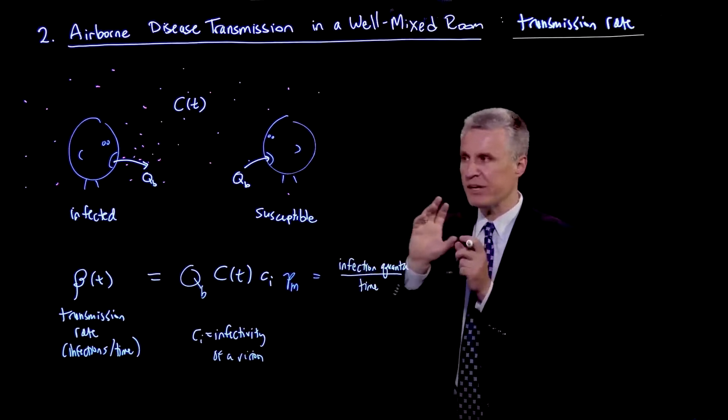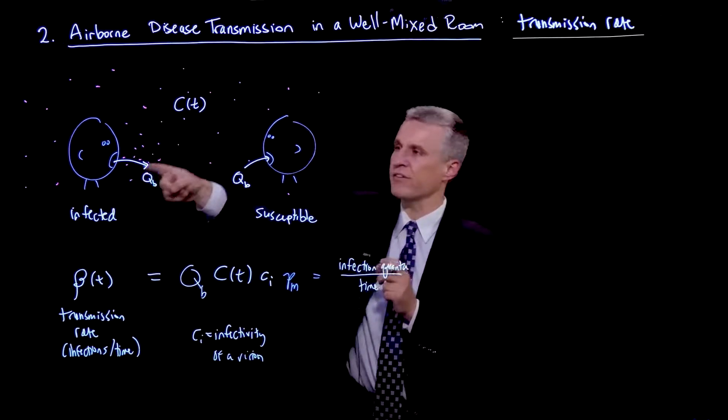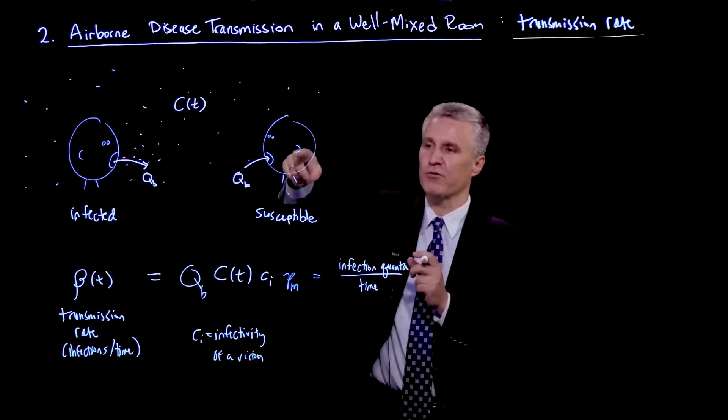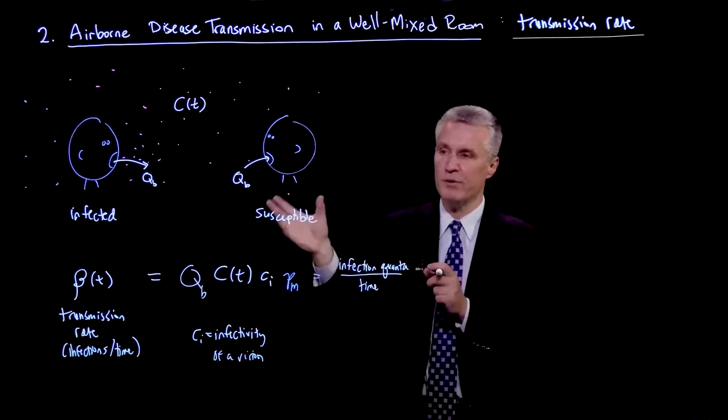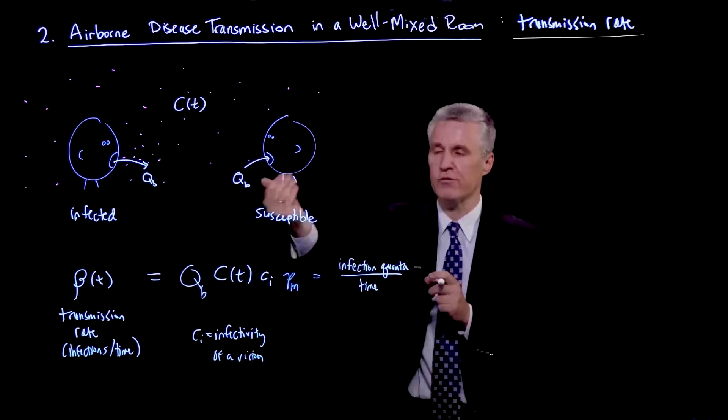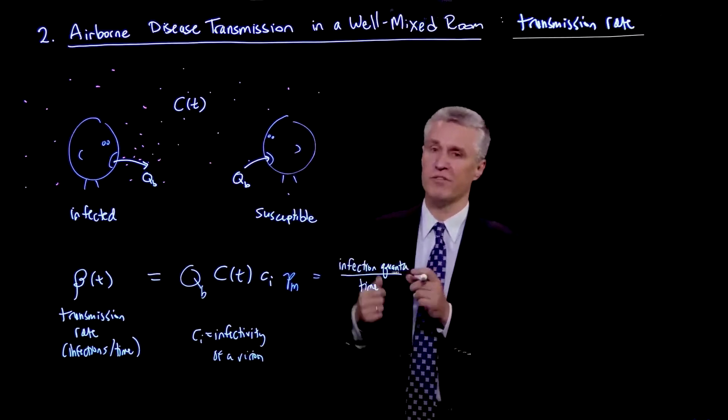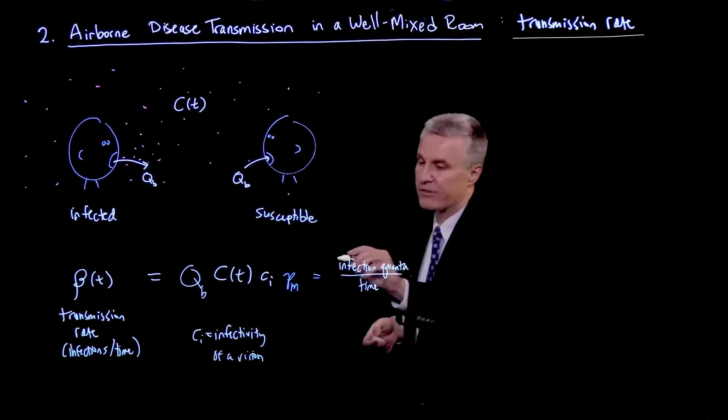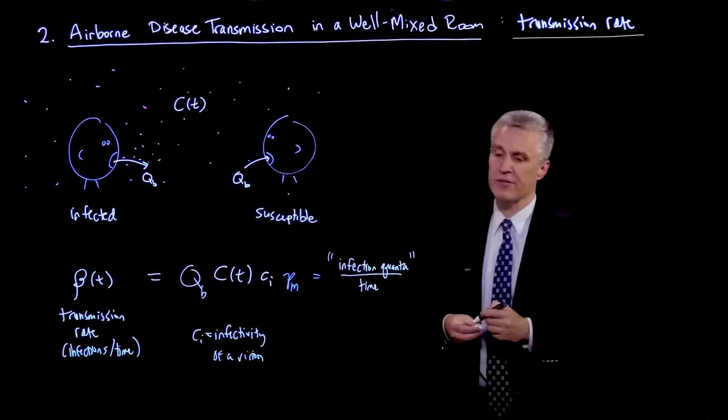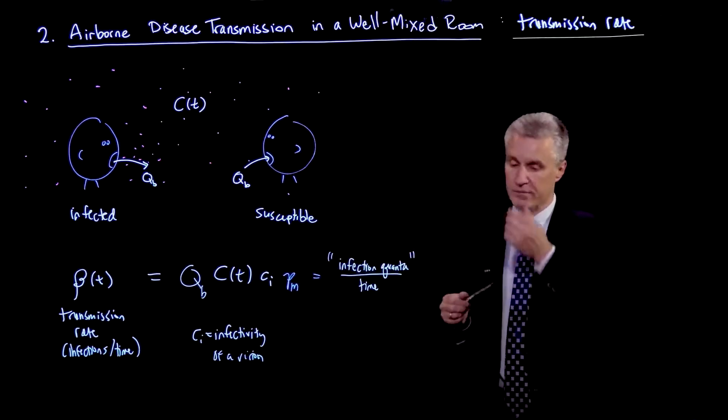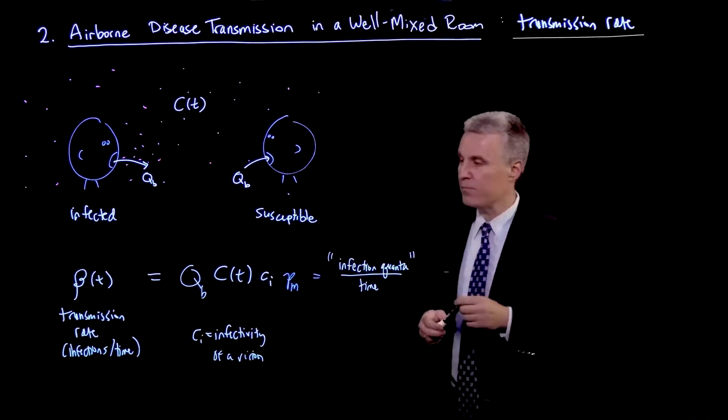But a useful way to think of it is that beta is the rate at which this person is sending infection quanta over here. Those quanta may not actually lead to an infection because they might already have been infected. But if they're susceptible, that tells you the rate at which that person would become infected. So that's the notion of infection quanta is essentially defined by the transmission rate beta.